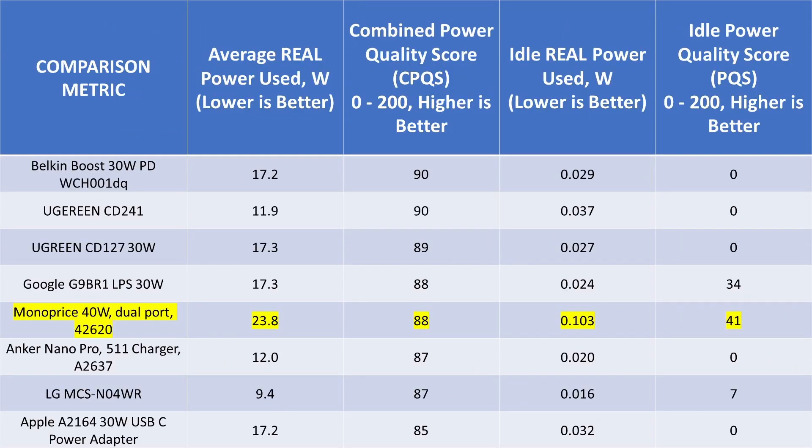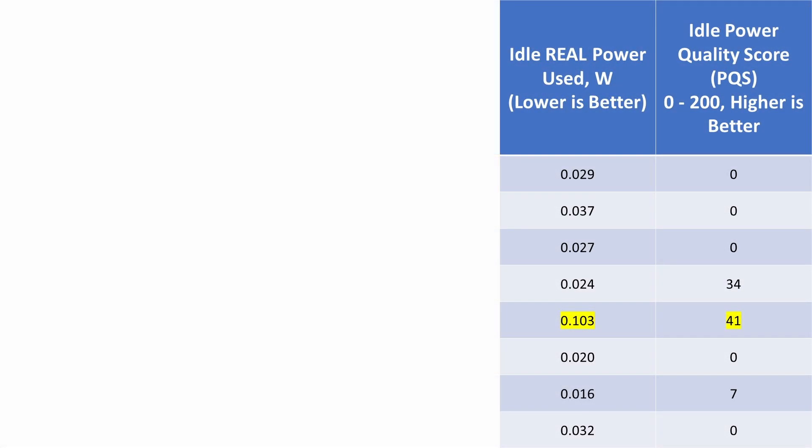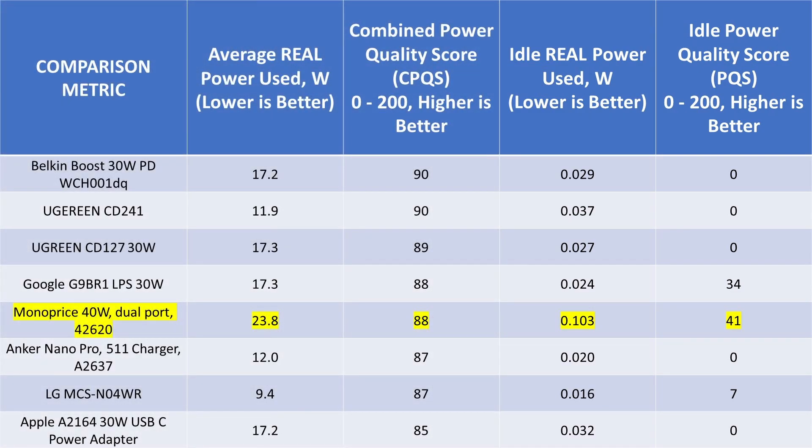So just a little primer on these numbers. So the first column, we have power usage and then we have an average power quality score. So this is its kind of average score for the device. Next two columns, we have the idle power usage and the idle power quality score. Both of these numbers really need to be taken together. So you need to look at how many watts does it use and the power quality scores. So we want to see the lowest number of watts and the highest possible power quality score.